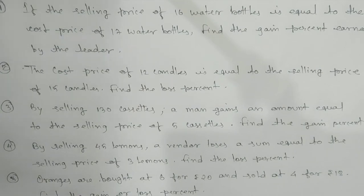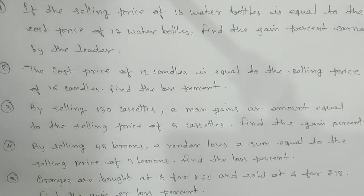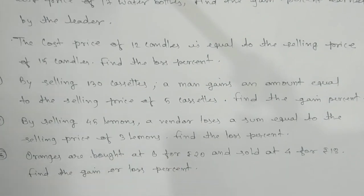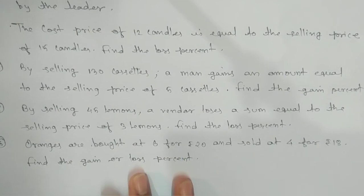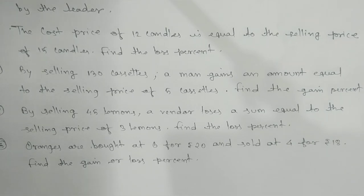Namaste students. Here we have five problems related to profit and loss. First: the selling price of 16 water bottles equals the cost price of 17 water bottles — find the gain percent. Second: the cost price of 12 candles equals the selling price of 15 candles — find the loss percent. Third: by selling 130 cassettes a man gains an amount equal to the selling price of 5 cassettes — find the gain percent. Fourth: by selling 45 lemons a man loses a sum equal to the selling price of 3 lemons — find the loss percent. Fifth: oranges bought at 6 for ₹20 and sold at 4 for ₹18 — find the gain or loss percent.